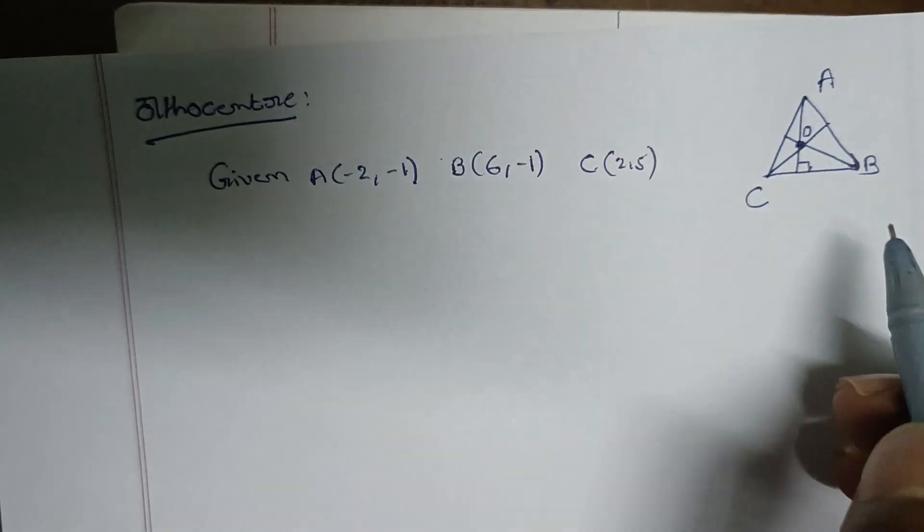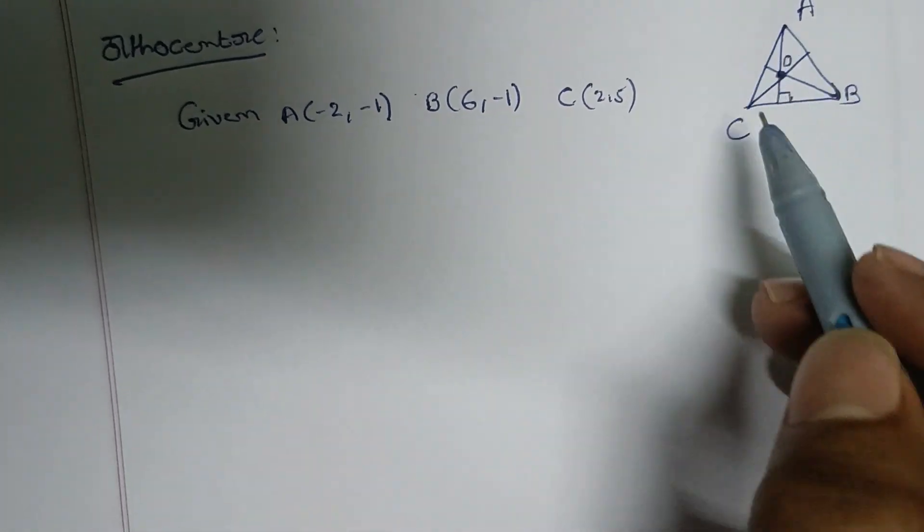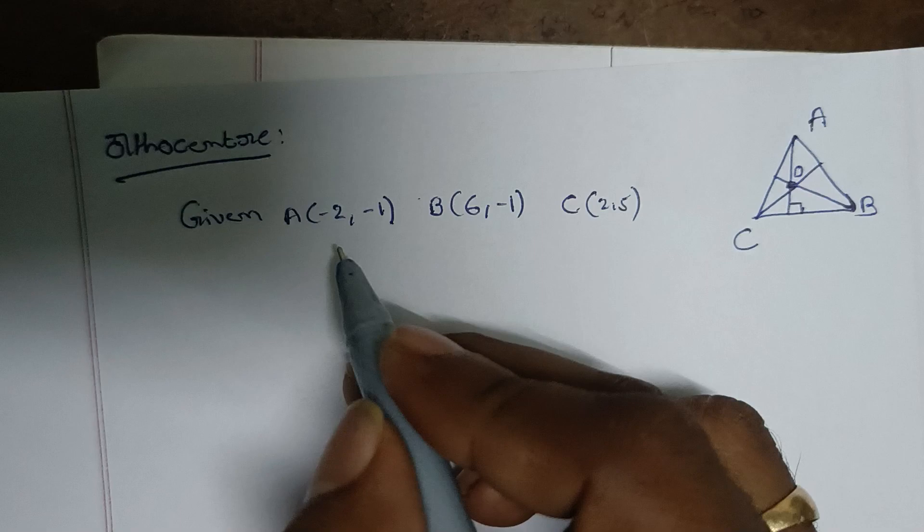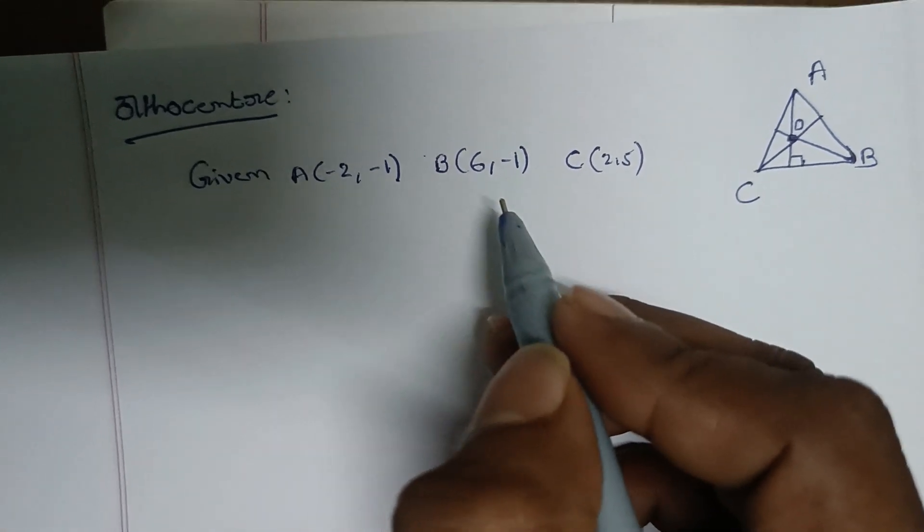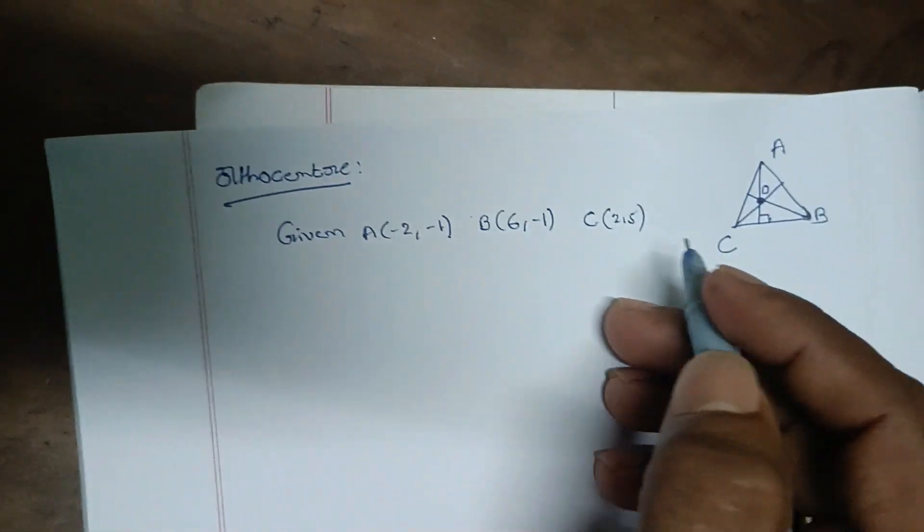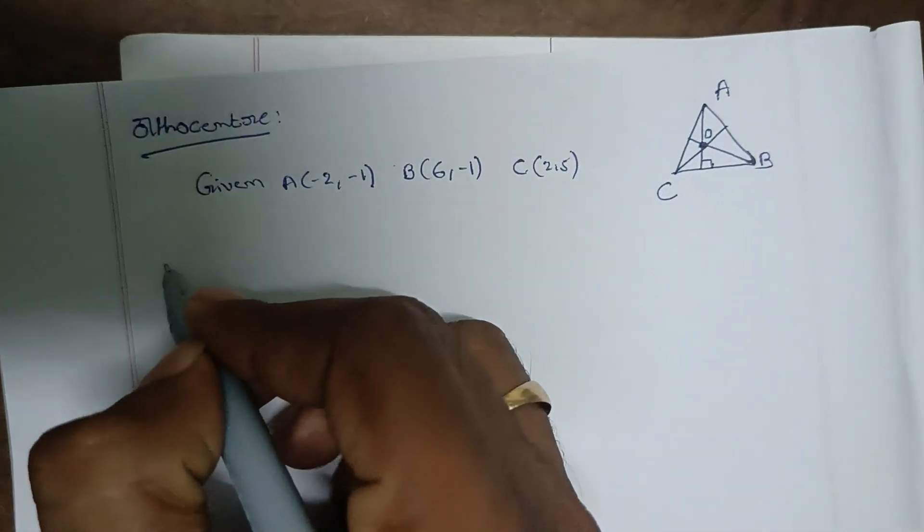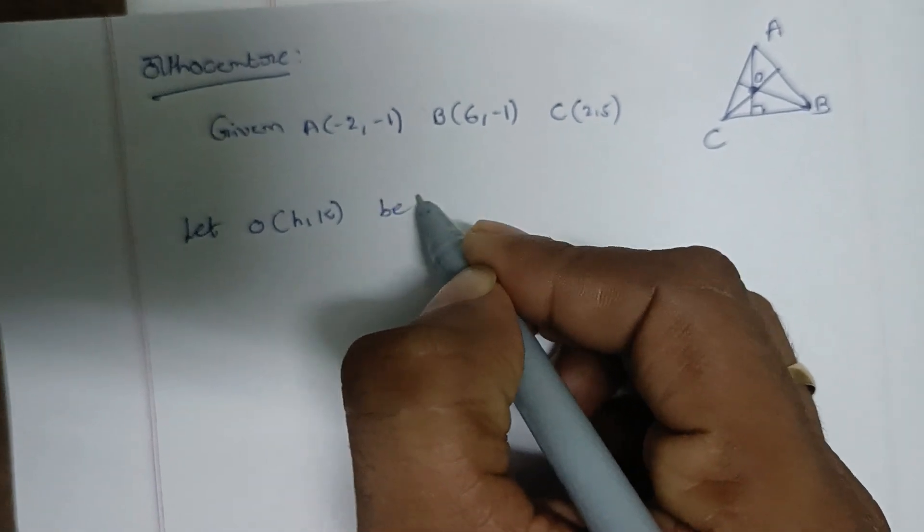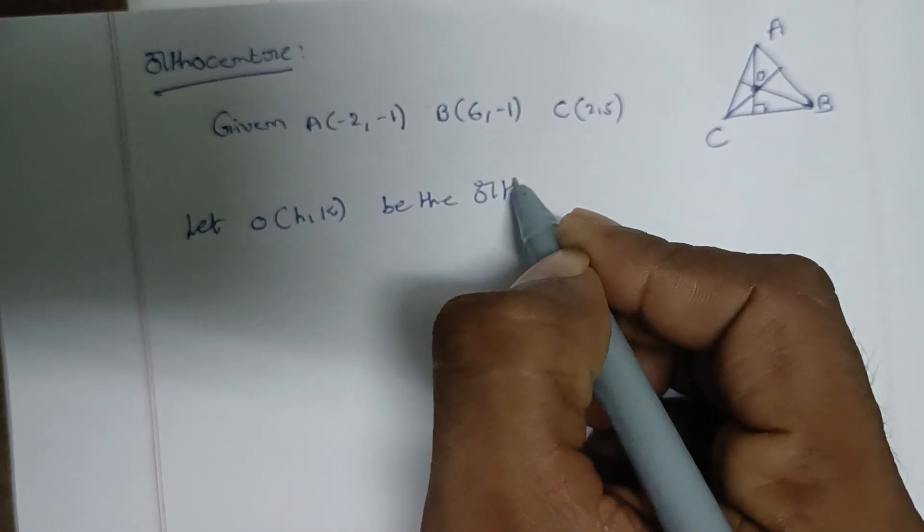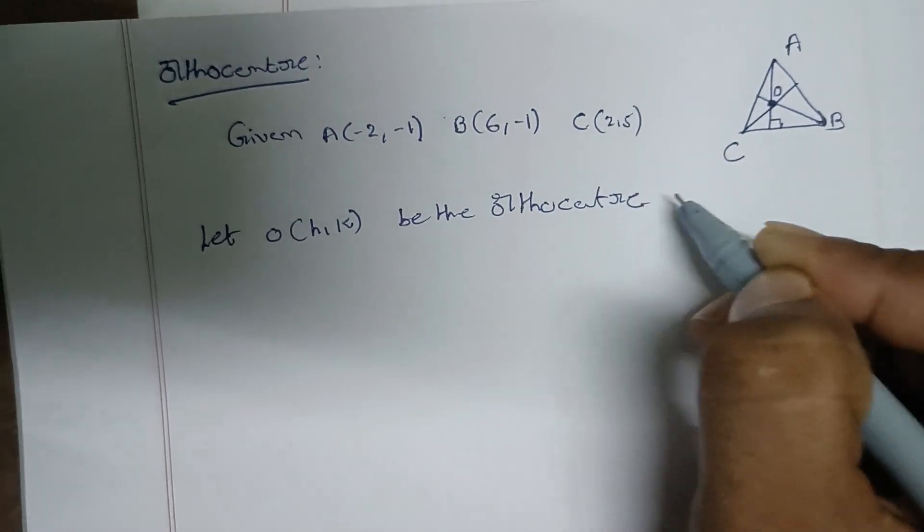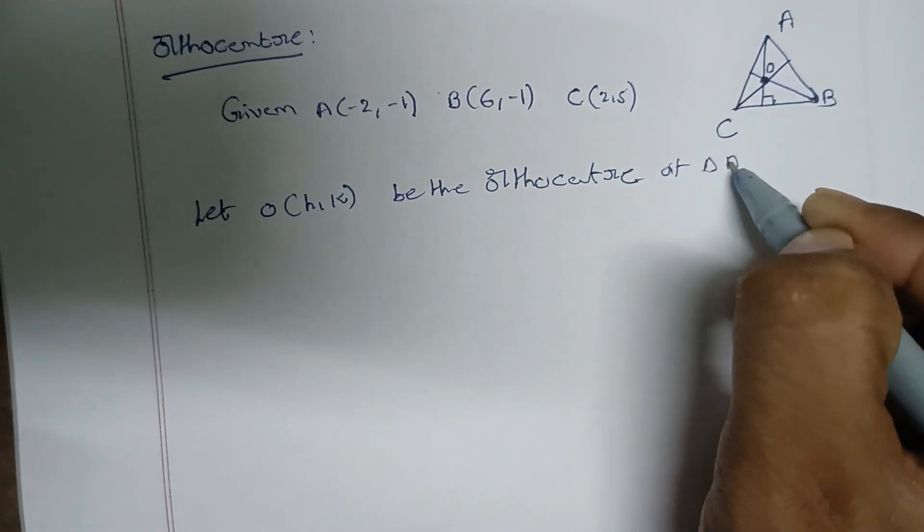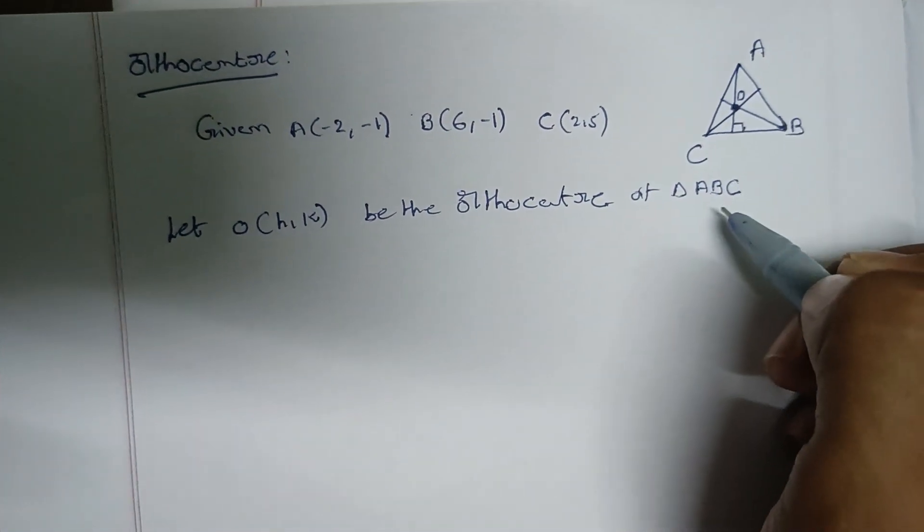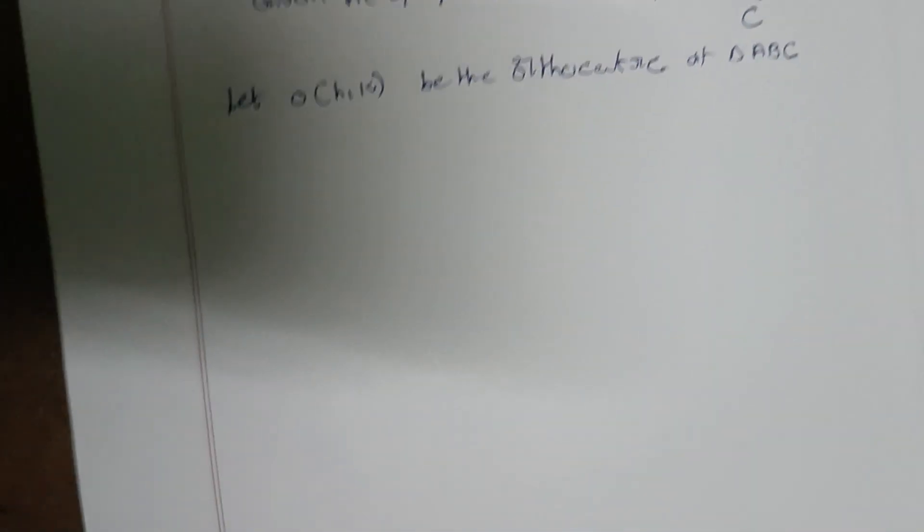To find the orthocenter when three points A, B, and C are given, let O(h,k) be the orthocenter of triangle ABC.